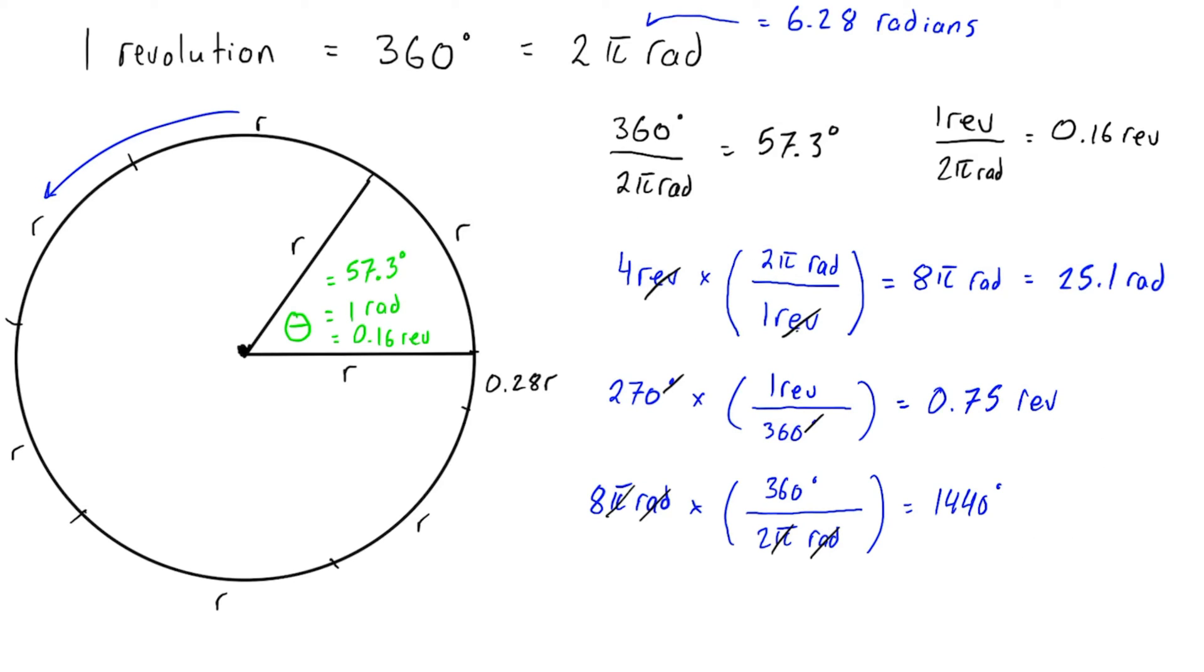One other thing that's going to come up a lot in circular motion problems is converting between—like introducing a unit of time as well. For example, you'll often see something like rpm. So let's say we have 90 rpm—this is revolutions per minute.